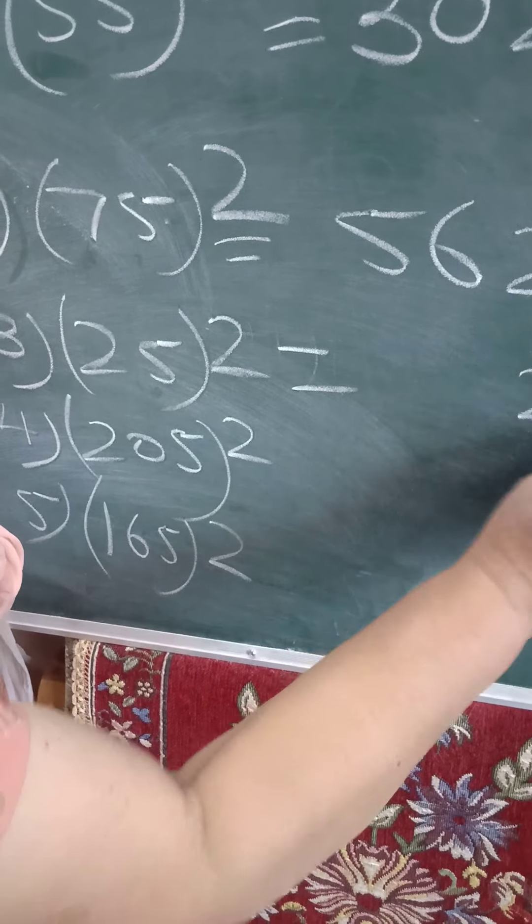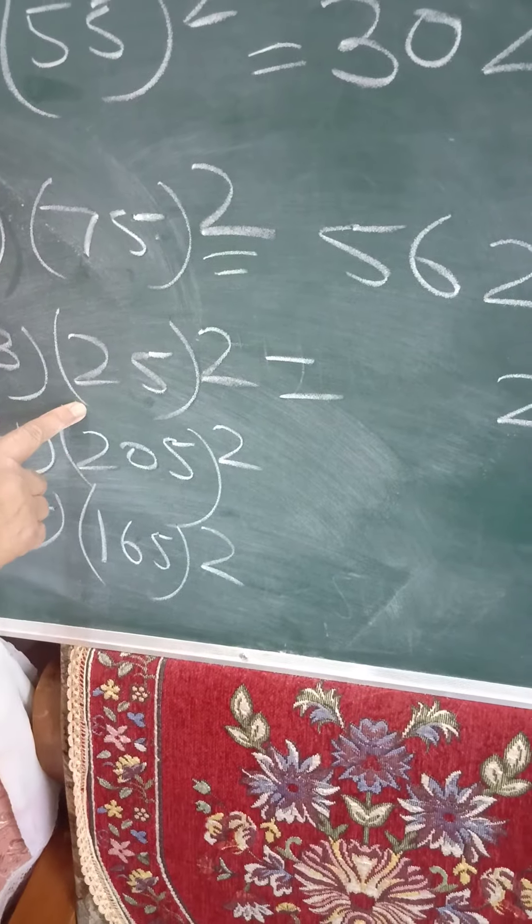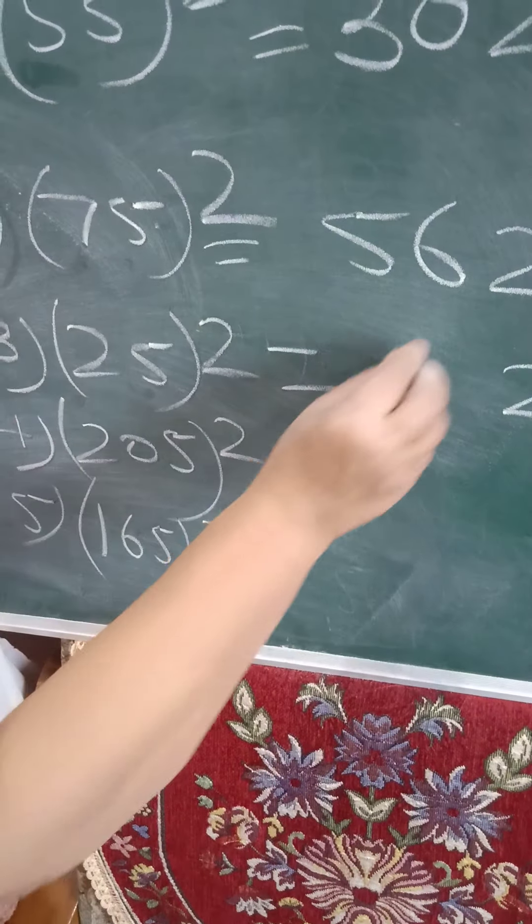See how it becomes very simple. 5, 5 is 25. 2. Next digit is 3. 2, 3 is 6.